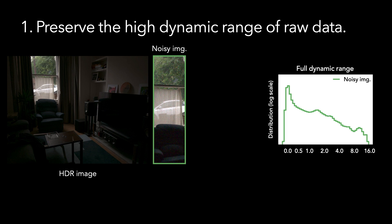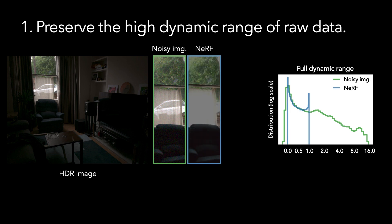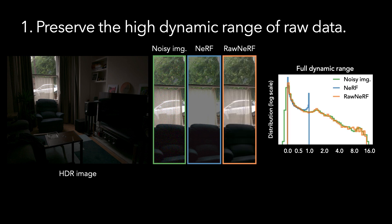If we look at the brightness histogram of the raw image, we can see it extends across many orders of magnitude. If you train a NeRF on low dynamic range images, because they are clipped, they'll lose details in the bright regions. Raw NeRF is directly trained on the original high dynamic range data, so it preserves the full histogram, recovering the car outside the window in the bright sunlight.